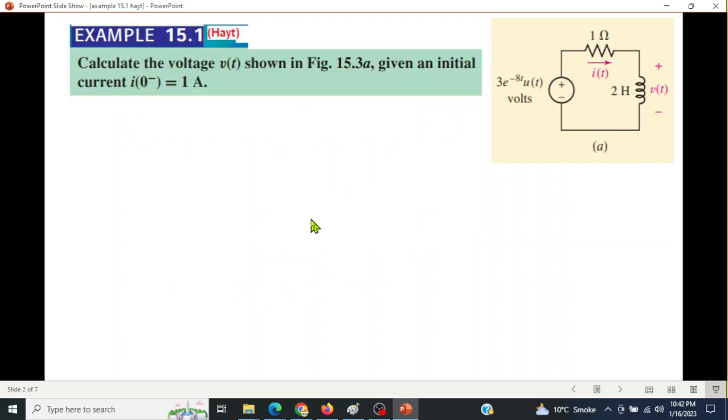Starting with example 15.1: calculate the voltage V(t) shown in the figure given the initial condition i(0) = 1 ampere. This is an RL circuit in time domain. The first thing we need to do is convert the circuit into Laplace domain, also called S domain or frequency domain.